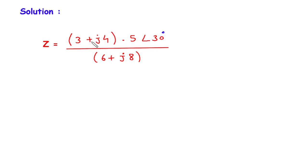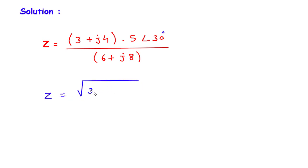So here 3 + j4 is multiplied with 5 ∠ 30°. So first of all we will convert this rectangular form to polar form, then we will multiply it. So Z is equal to — we have to convert 3 + j4 to polar form. So Z is equal to √(3² + 4²) at an angle of tan⁻¹(4/3).